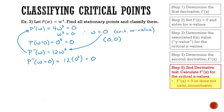So this time we have an inconclusive second derivative test. When our second derivative is equal to 0 — or alternatively it's non-existent and can't be calculated — we have an inconclusive second derivative test and we don't know what type of point it is. It could be a minimum, it could be a maximum, or it could be a saddle point.